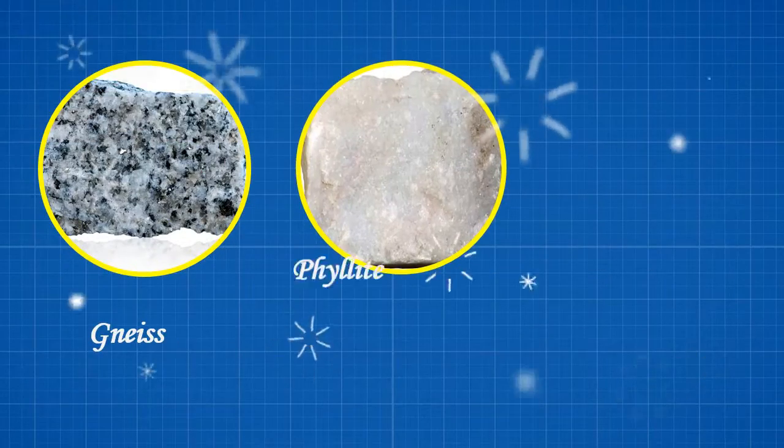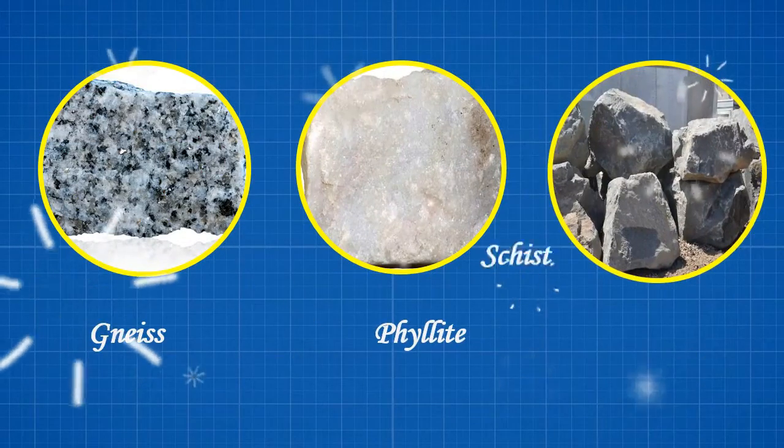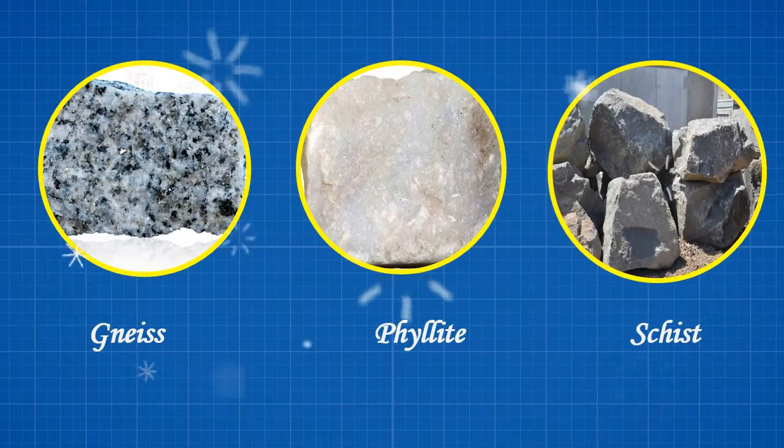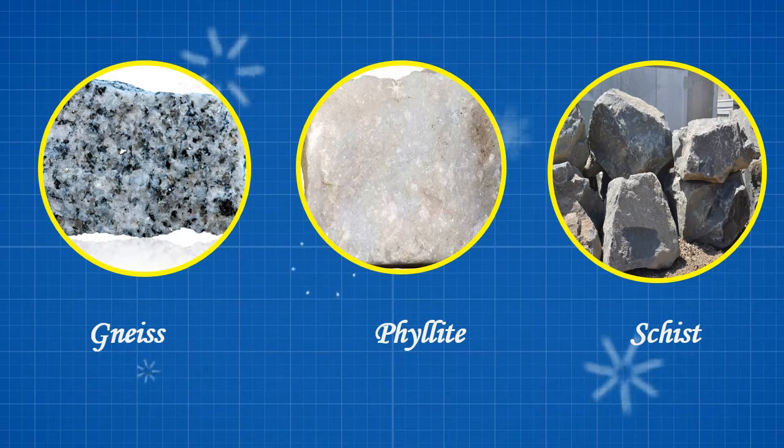The examples of foliated rocks are gneiss, phyllite, schist, etc.